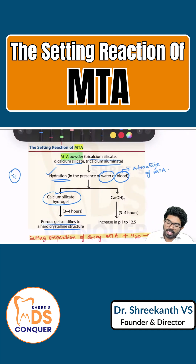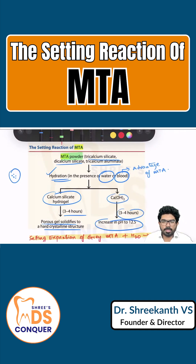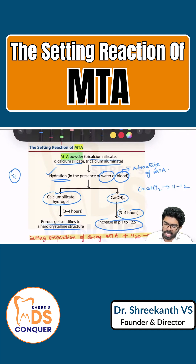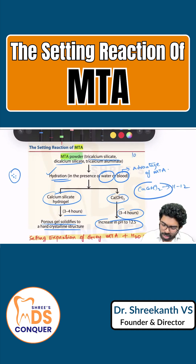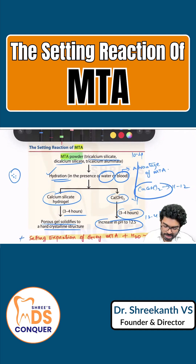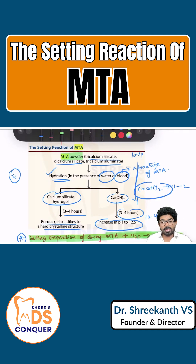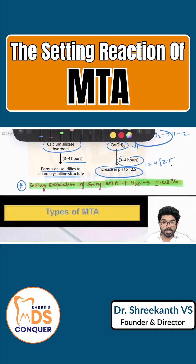The calcium hydroxide present in MTA increases the pH — from an initial pH of 10.4 to a final pH of 12.4 or 12.5 — compared to normal calcium hydroxide which has a pH of only 11 to 12. Another important point to note is that the setting expansion of gray MTA in the presence of water is 1.02%.